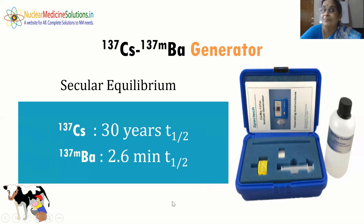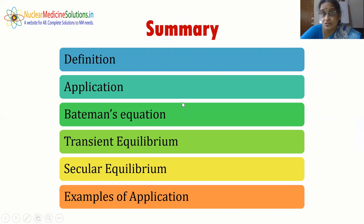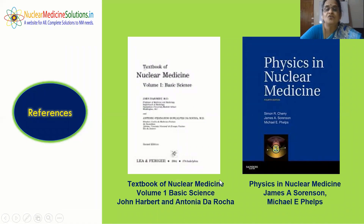In summary, we covered: the definition of radioactive equilibrium, its application in the form of radionuclide generators, Bateman's equation as the basis for determining daughter radioactivity over time, transient and secular equilibrium, and examples of application in nuclear medicine. References used are 'Textbook of Nuclear Medicine, Volume 1: Basic Science' by John Harbert and Antonia da Rocha, and 'Physics in Nuclear Medicine' by James A. Sorensen and Michael A. Phelps.